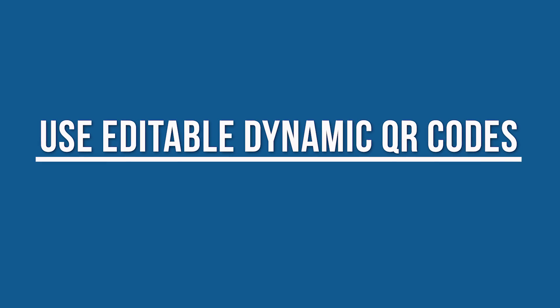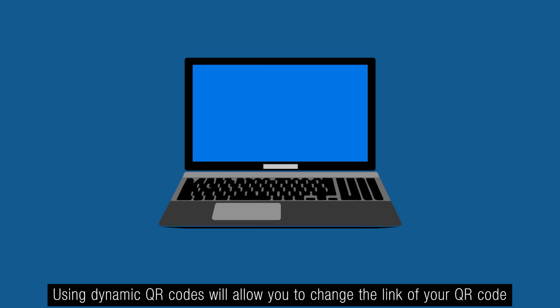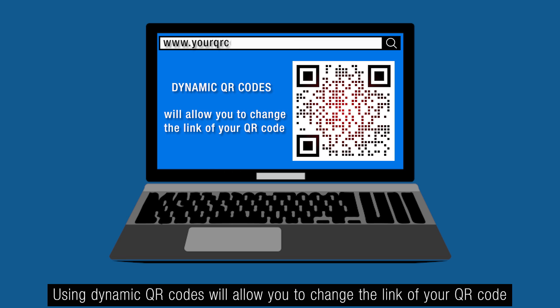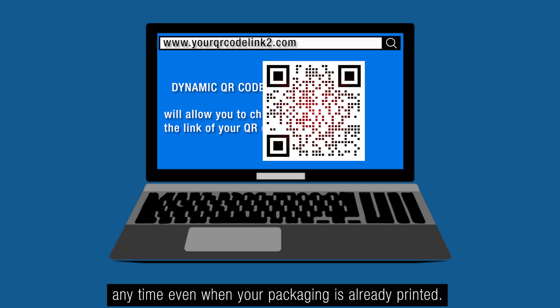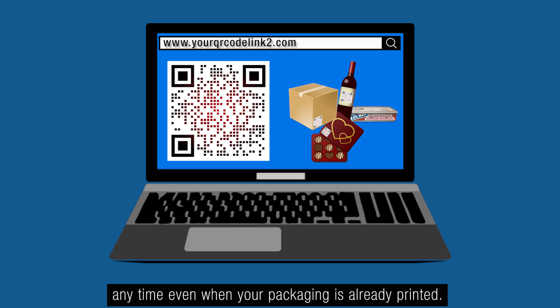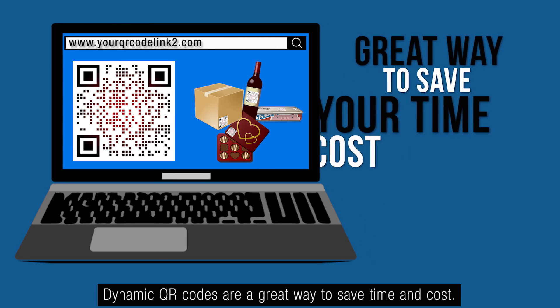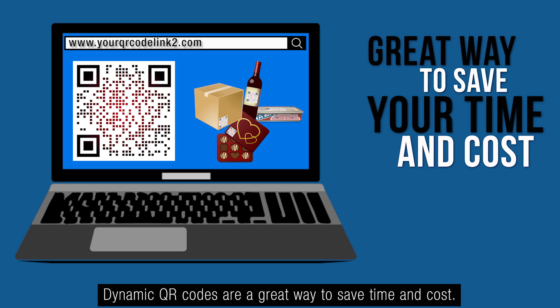Tip number two: Use editable dynamic QR codes. Using dynamic QR codes will allow you to change the link of your QR code anytime, even when your packaging is already printed. Dynamic QR codes are a great way to save time and cost.